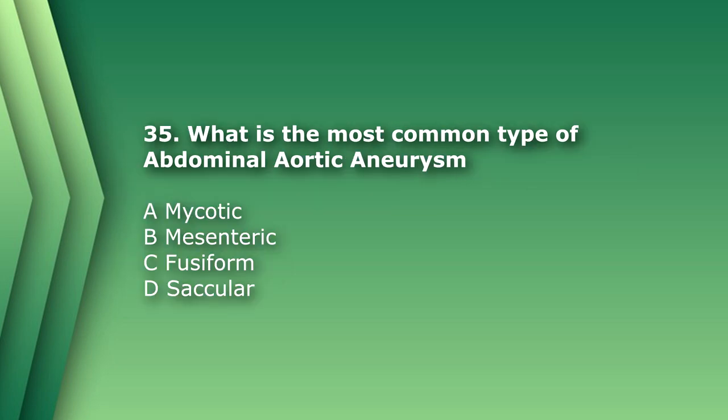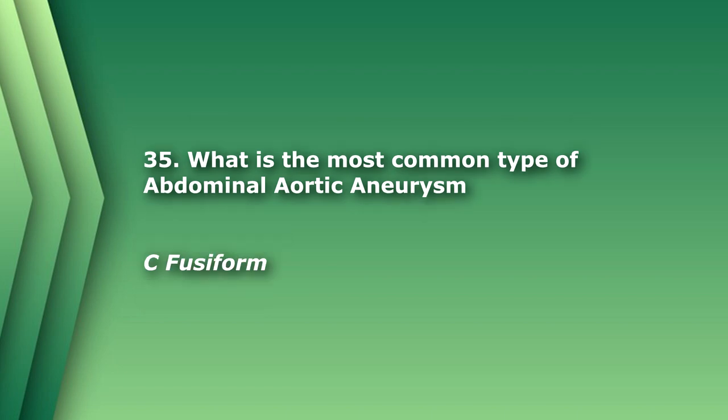Number 35. What is the most common type of abdominal aortic aneurysm? A. Mycotic. B. Mesenteric. C. Fusiform. D. Saccular. The answer is C, fusiform.